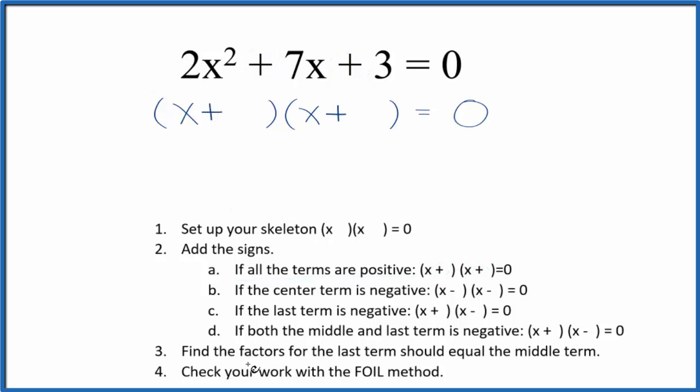Next, I'm going to find the factors for the last term that should equal the middle term. But in this case, we have the 2 here. So that kind of throws things off. So let's put the 2 right here. And let's look at the factors of the last term, the 3 here. 3, the factors are 1 times 3.